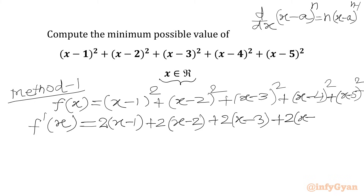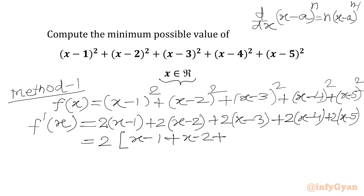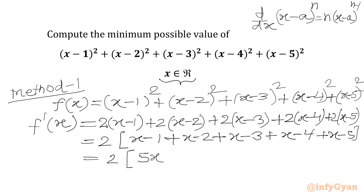Continuing the derivative: plus 2(x-4) plus 2(x-5). Simplifying, we get 2 times [x + x + x + x + x] minus [1+2+3+4+5], which gives 2(5x - 15).